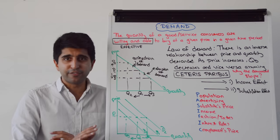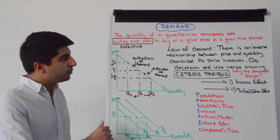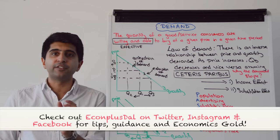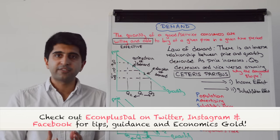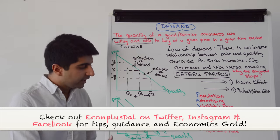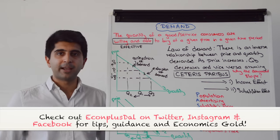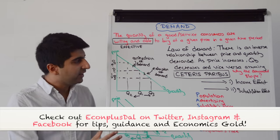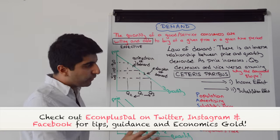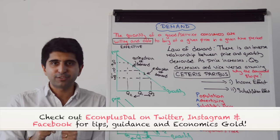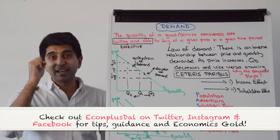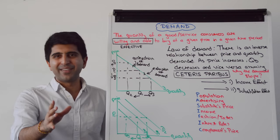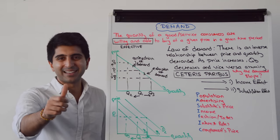So that covers demand theory fully. A movement along the curve happens if the price of the good itself changes. Whereas if non-price factors affect demand, we show a shift of the demand curve. Get practicing with all these non-price factors, know PACIFIC well, practice it, master it, and stay tuned for the next video where we do the same for supply.